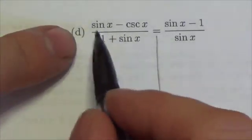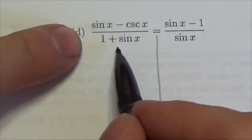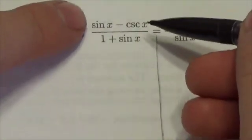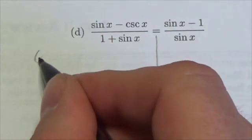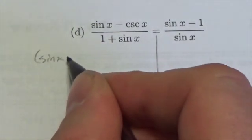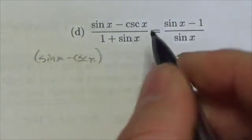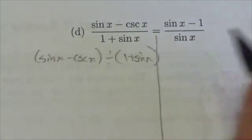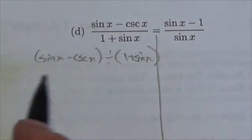So first of all what I want to do is, I've got this fraction again. I don't see any Pythagorean identities but I do see something here that I can do to make my life a little bit easier. I'm going to make this the sine of x minus the cosecant of x divided by 1 plus the sine of x. I know there's not a lot of room there but there we go.